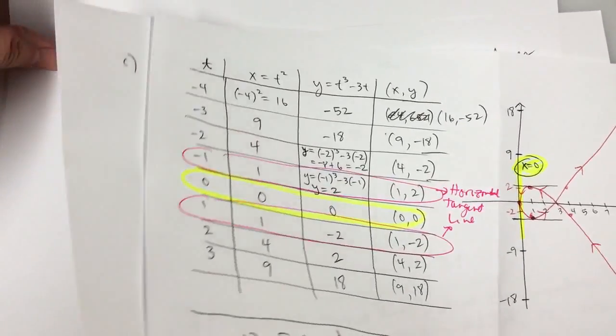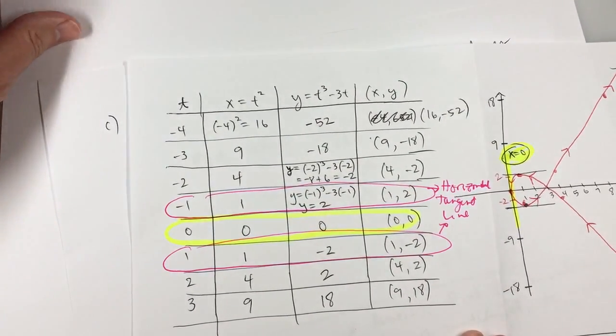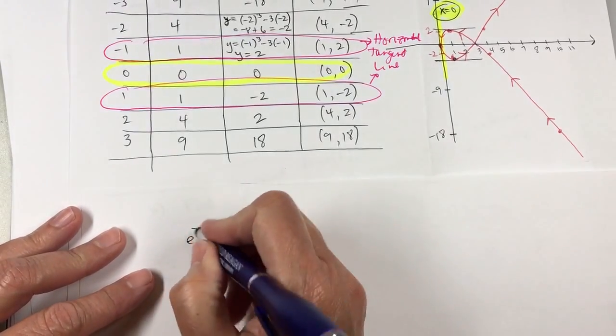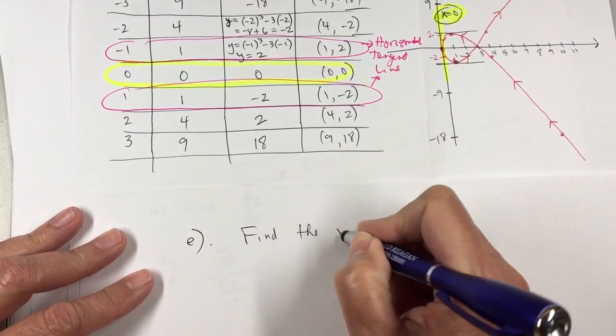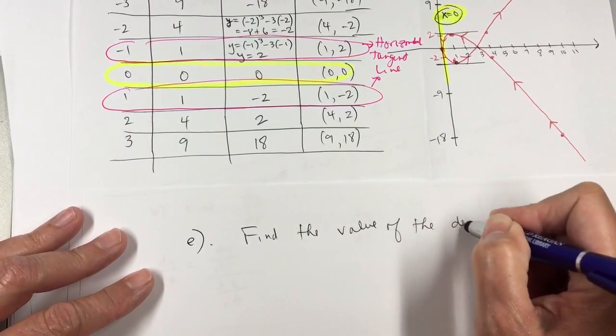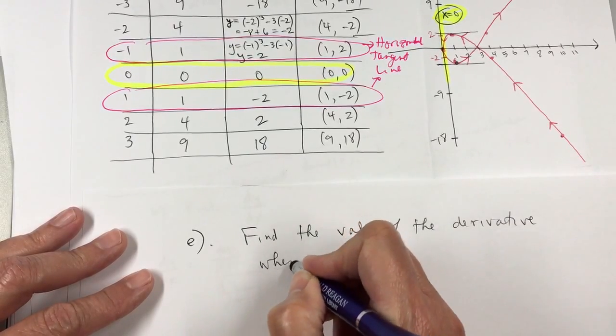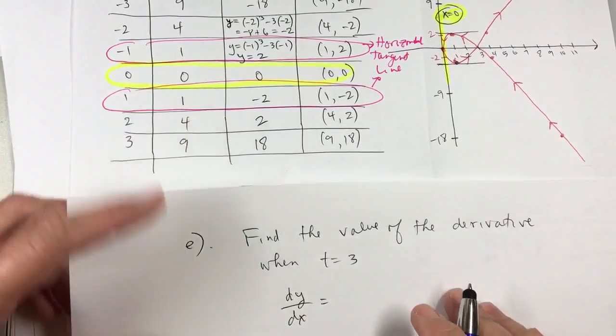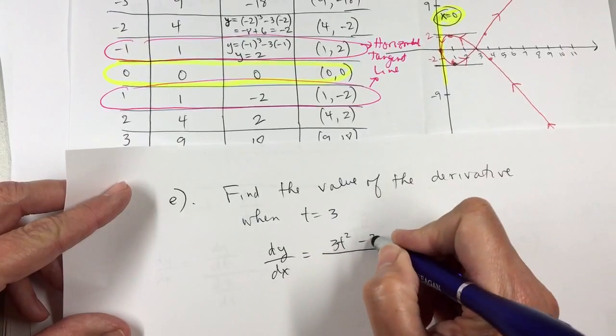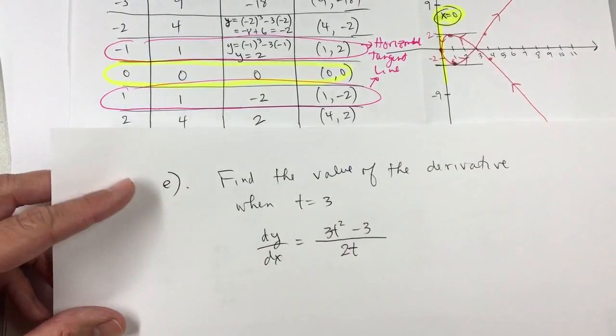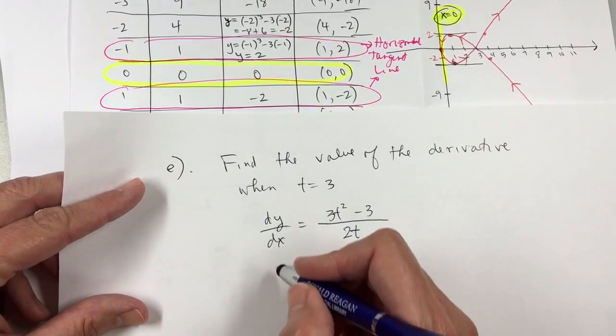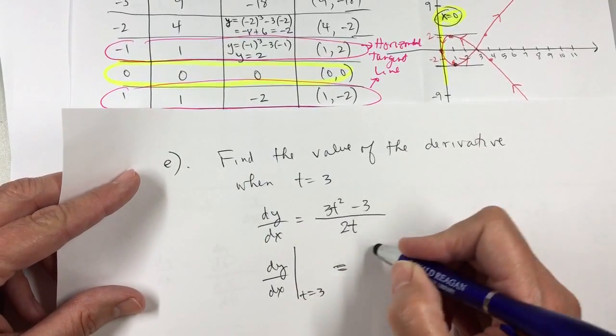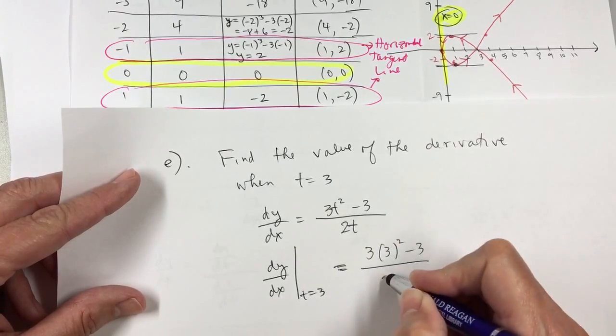Okay, so now yesterday, we also did the value of the derivative at t equals 3. So here is part E. Find the value of the derivative when t equals 3. So my derivative dy over dx was 3t squared minus 3 over 2t. And so when t equals 3, dy over dx at t equals 3.